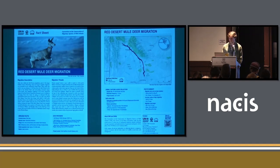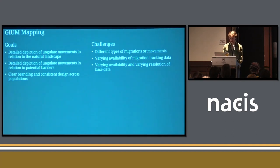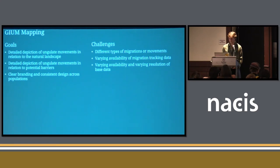For this, we wanted to produce a well-branded and standardized map design that can be applied to ungulates all over the world. But this is a tricky task, because the world is a big place with very different types of migrations across different populations. Tracking data looks different in many places and is at different stages of research. There is also varying availability and resolution of base data for different regions of the globe.